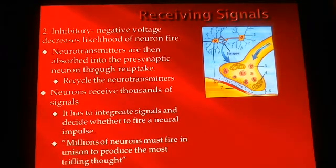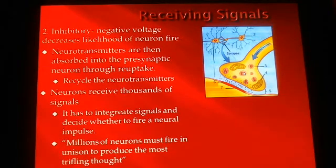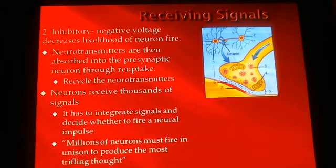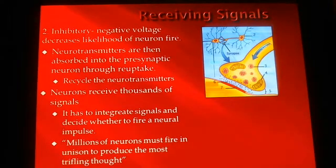Neurotransmitters are then reabsorbed back into the old neuron — this is called reuptake, and that's an important term. Neurons receive thousands of signals, and it takes millions of neurons firing to produce even the most trifling thought. Just two or three neurons connecting does not mean you're making a memory. It takes thousands upon thousands of neurons all working together to build that memory. If anywhere along that chain the connection gets broken — because you lose attention, get interference, or lose your focus — then it's gone and the memory is lost.